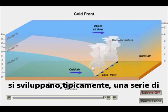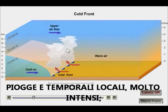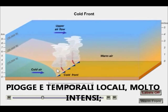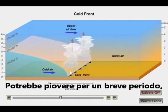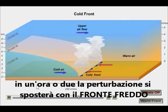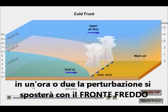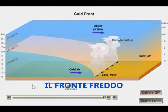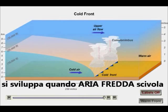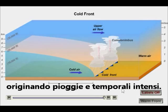Along cold fronts, you typically have very intense local thunderstorms and rainstorms. It might pour rain for a short time, but then quickly, usually within an hour or so, the front will have moved on. So a cold front is where the cold air pushes underneath the warm air, and you have high rainfall and usually intense thunderstorms.